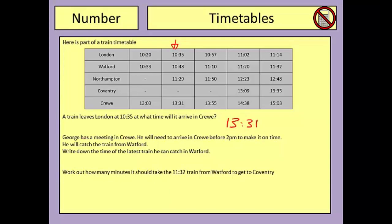The second part of this example: George has a meeting in Crewe and will need to arrive before two o'clock to make it on time. This train gets in before two o'clock, so does this one, so does this one. However, these two won't work — George will be in Crewe too late.